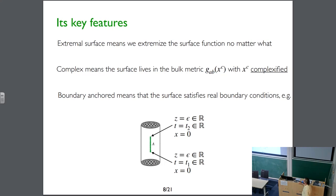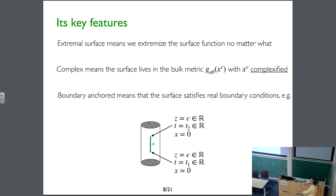The idea is that we do exactly the same as RT and HRT did, but now considering boundary-anchored complex extremal surfaces. Extremal surface means we extremize the area functional and solve the Euler-Lagrange equations. Complex means the surface lives in the bulk metric with complexified coordinates — the time coordinate is a complex variable, as are all spatial coordinates. Boundary-anchored means the surface satisfies real boundary conditions on the standard asymptotic boundary of ADS.